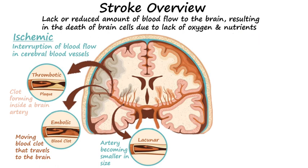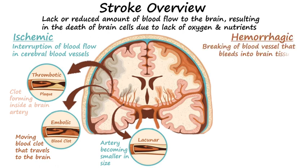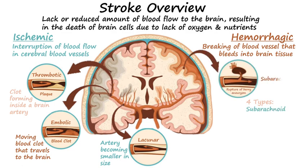Hemorrhagic strokes occur when a blood vessel breaks and bleeds into brain tissue. Hemorrhagic strokes are less common but have a higher fatality rate. Four major types include subarachnoid, intracerebral, epidural, and subdural bleeds.